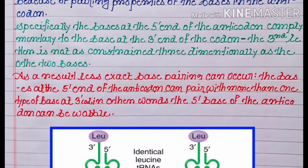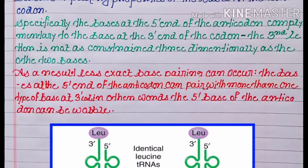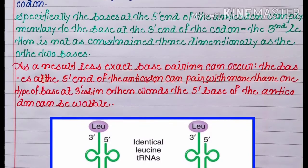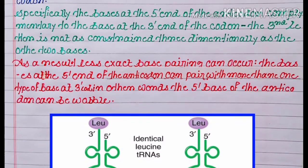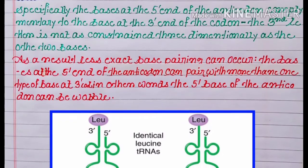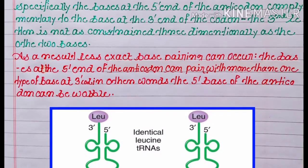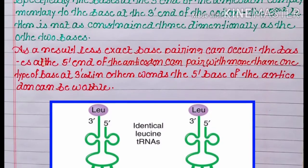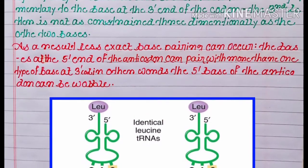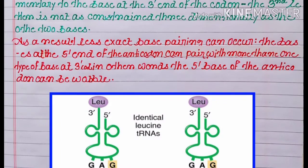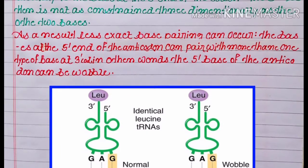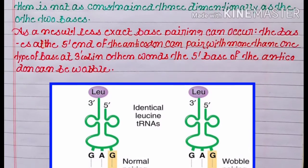As a result, less exact base pairing can occur. The bases at the 5 prime end of the anticodon can be paired with more than one type of base at 3 prime codon. In other words, the 5 prime base of the anticodon can wobble.